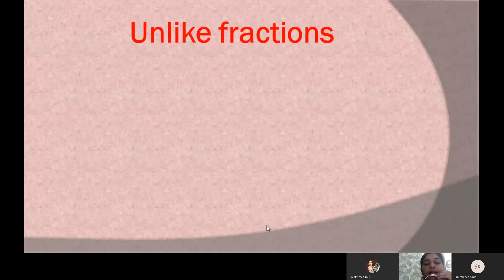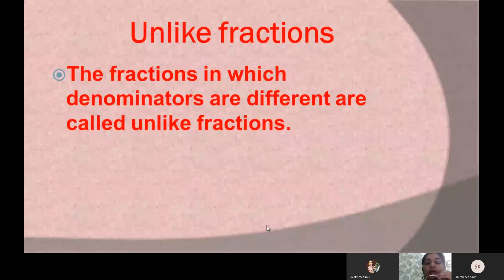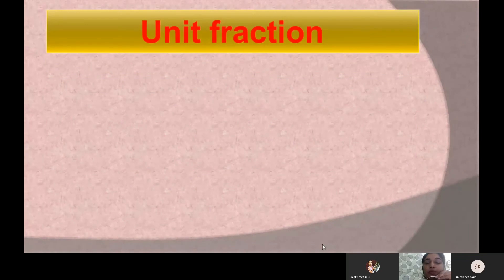Now let us learn what unlike fractions are. Unlike fractions are those fractions in which the denominators are different — not the same. For example, we are having the fractions 2 by 13, 7 by 5, and 5 by 8. In these three fractions, all the denominators are different.